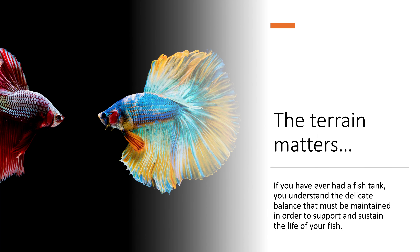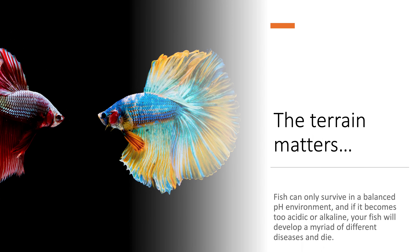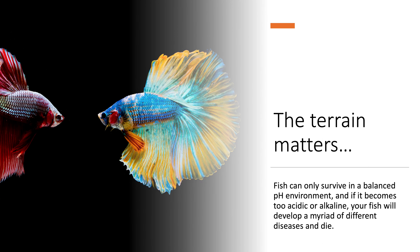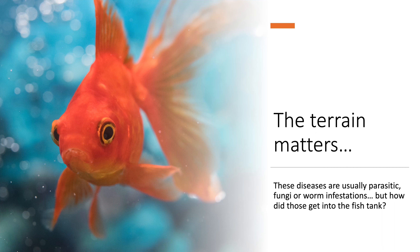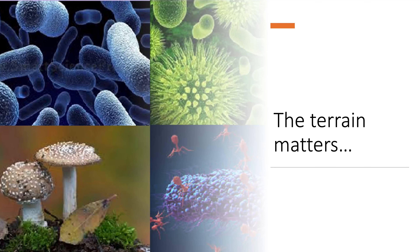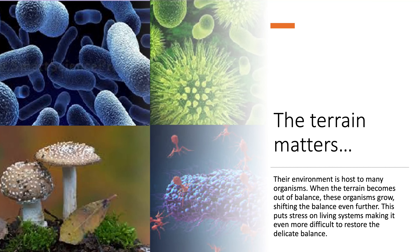The terrain matters. If you have ever had a fish tank, you understand the delicate balance that must be maintained in order to support and sustain the life of your fish. Fish can only survive in a balanced pH environment, and if it becomes too acidic or alkaline, your fish will develop a myriad of different diseases and die. These diseases are usually parasitic, fungi, or worm infestations. Their environment is host to many organisms. When the terrain becomes out of balance, these organisms grow, shifting the balance even further, putting stress on living systems and making it even more difficult to restore the delicate balance.